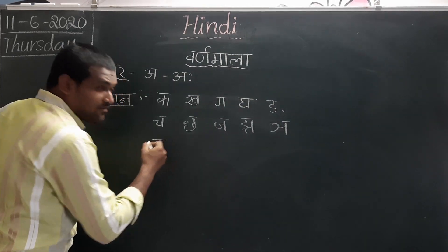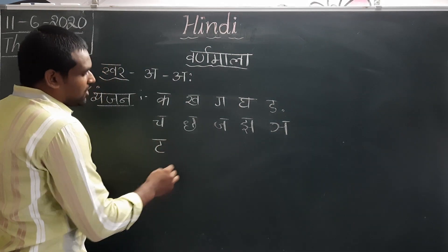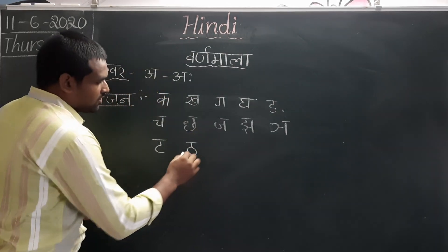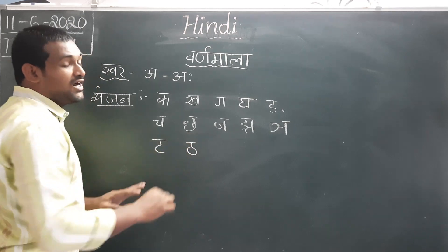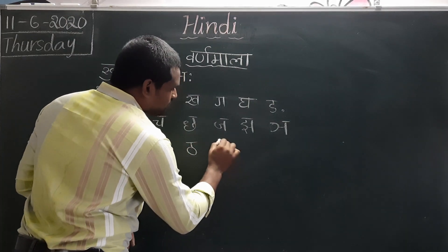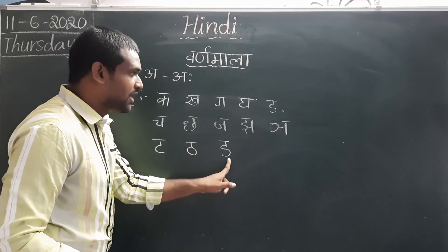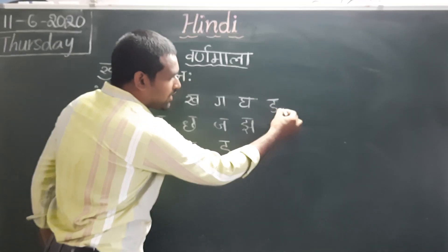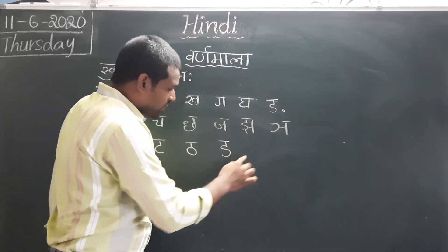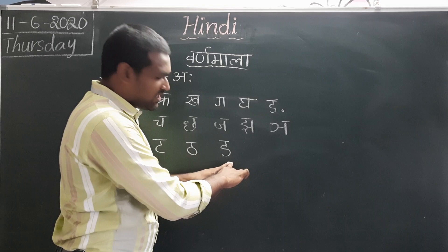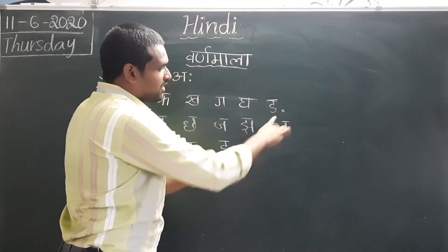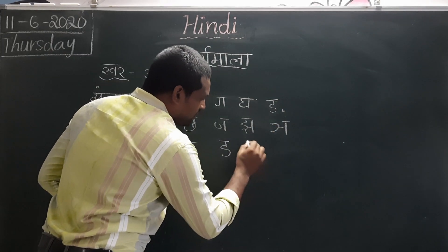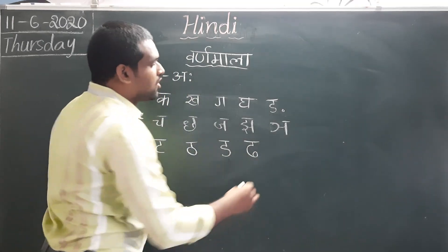The next varga is the Ta Varga. The first letter is Ta, then Tha — it's more like an underground sound. Next is Da. I already told you: if you do not keep the dot on this letter, Da will become a different letter. So be very careful when writing Hindi — a single dot will change the letter.